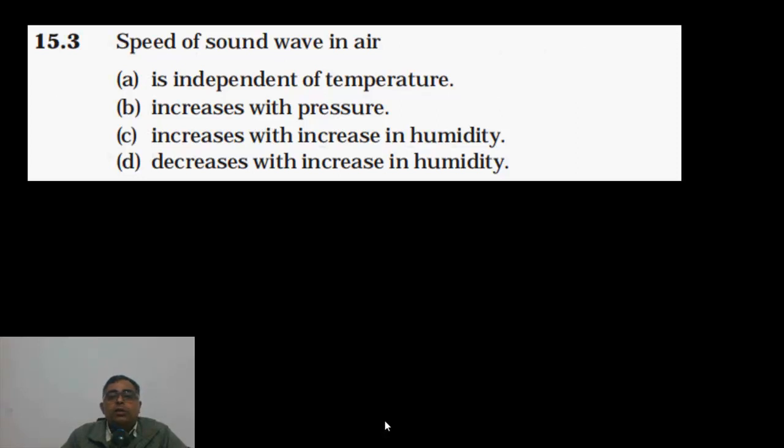The speed of sound in air is given by V is equal to under root gamma P by rho. Gamma, ratio of specific heats, P pressure and this rho is the density of the air.